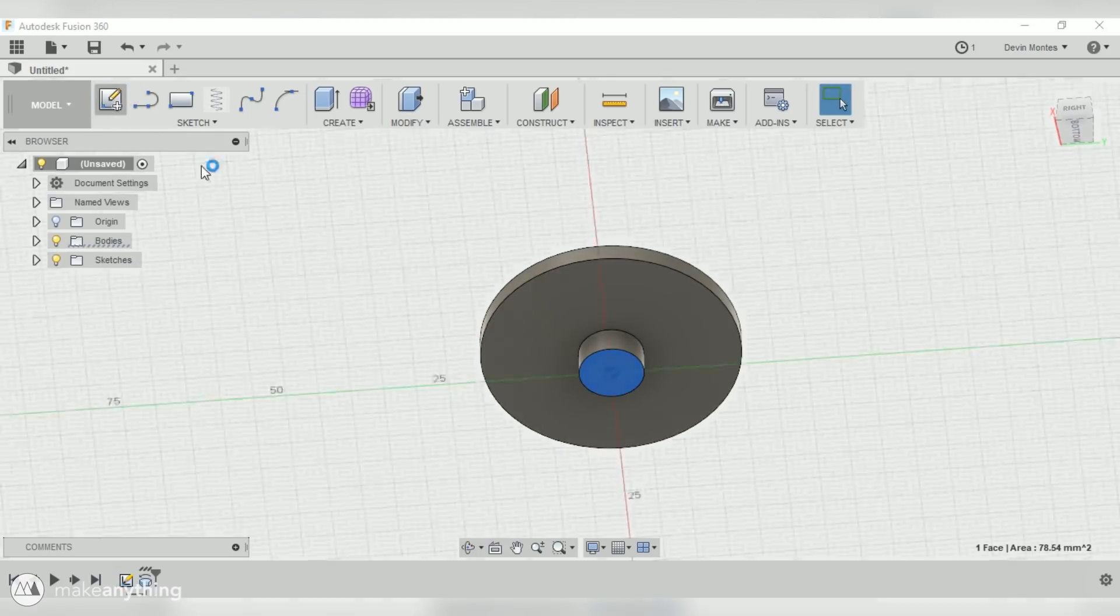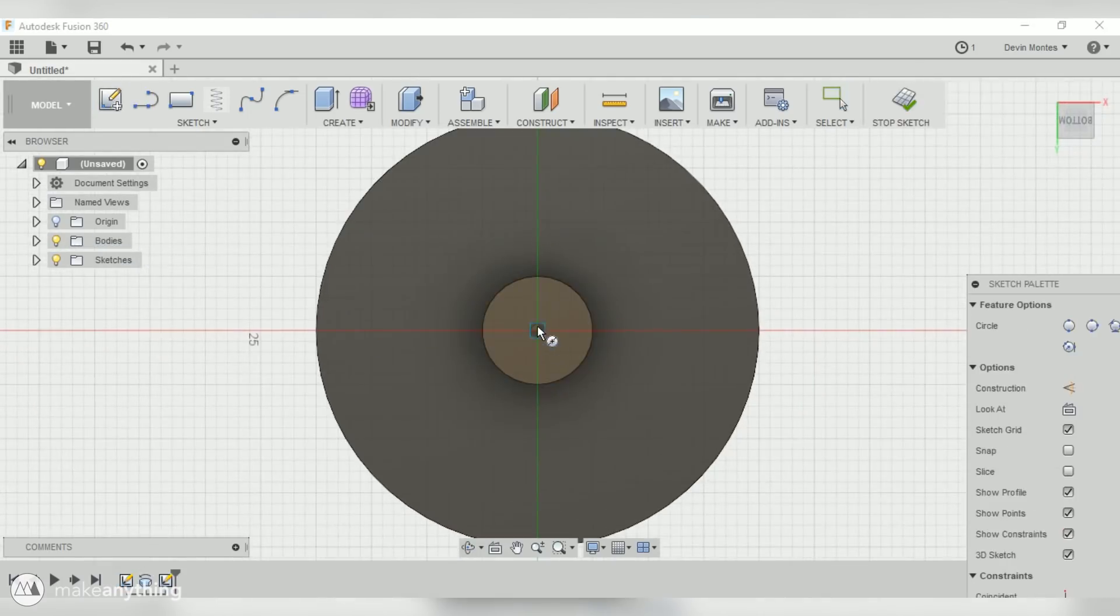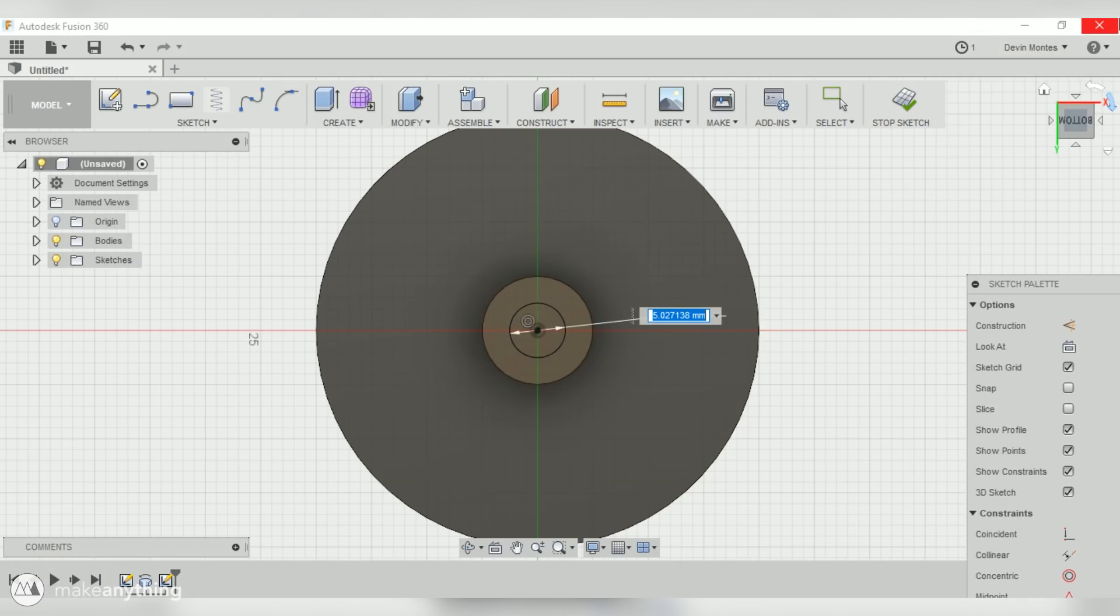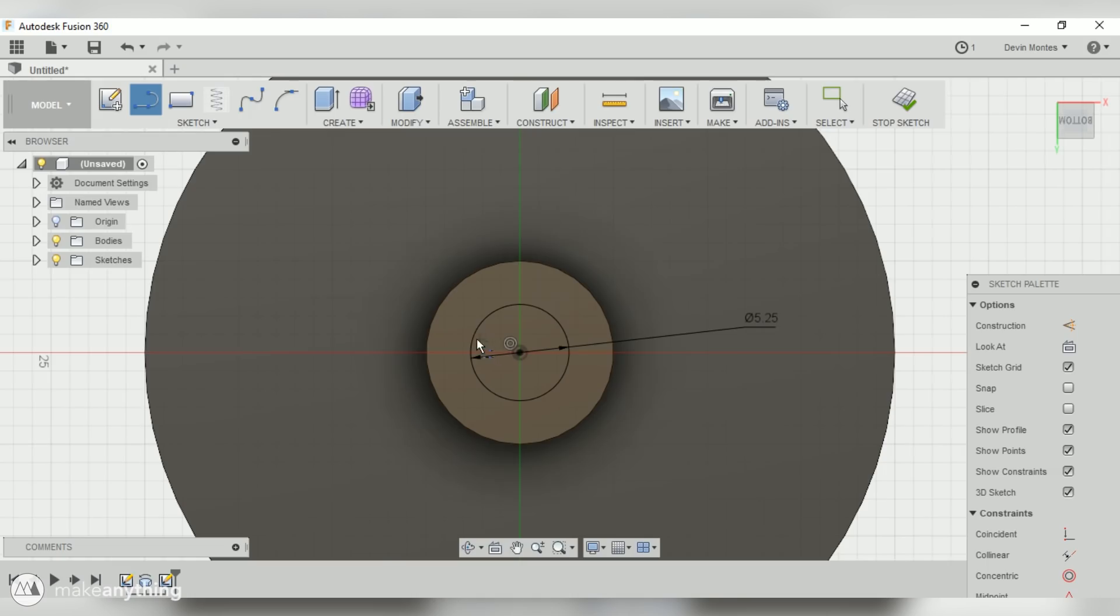Now I'll just sketch on this little circle right here, and we'll draw out the hole that's going to go over that metal shaft. The base shape of that hole is just a circle, so we'll draw that out and give it a dimension. The shaft is 5 millimeters, so let's make this 5.25 to give it some clearance so that I can slip over the top.